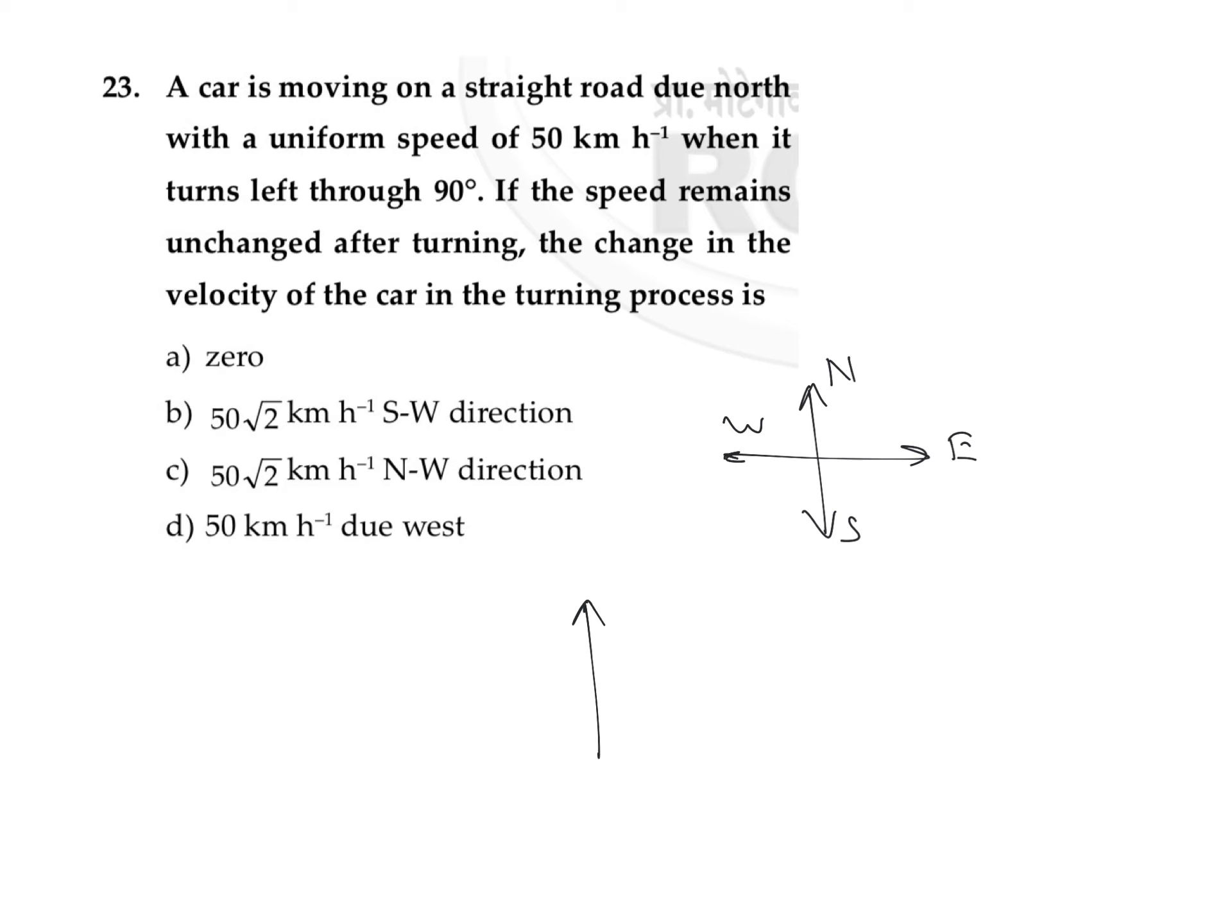So initially the car was moving along this direction with a speed of 50 km per hour. When it turns left through 90 degrees, now it makes a turn towards left, and its velocity still remains the same, that is 50, or the magnitude of velocity or speed will remain the same, that is 50 km per hour.